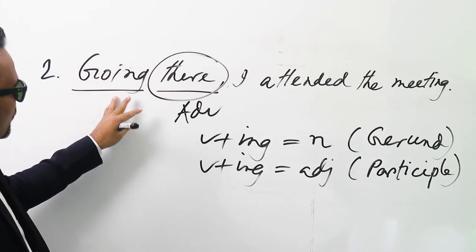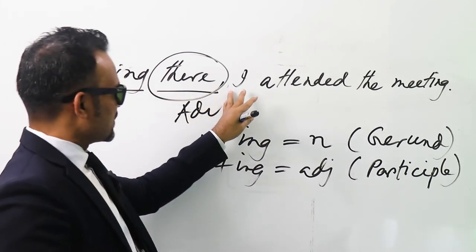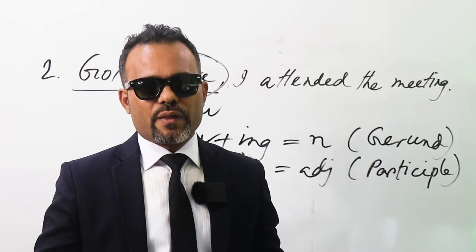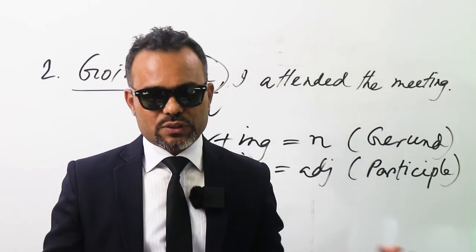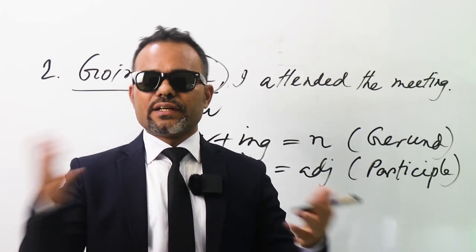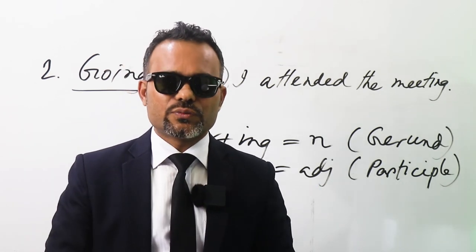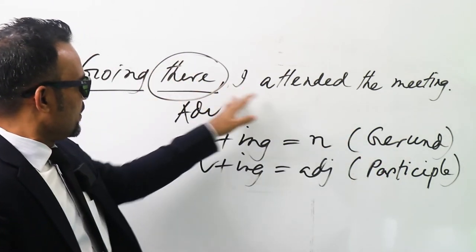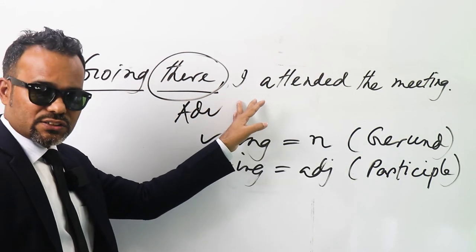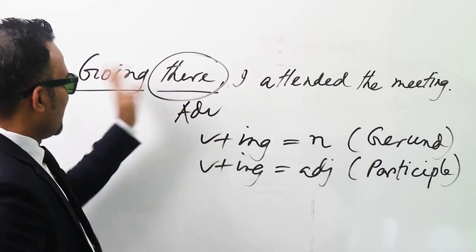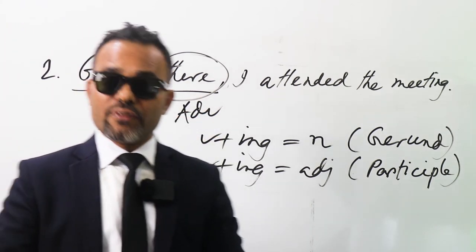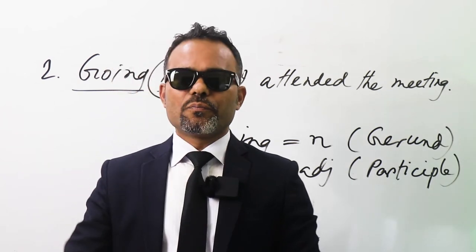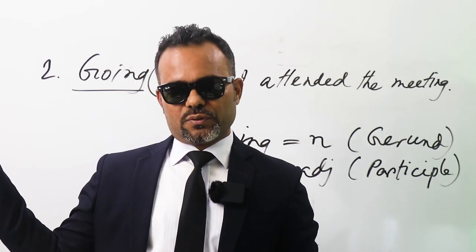Look at 'going there' — up to this part, you can call it a phrase or a clause. In modern English it's a clause; in traditional English, a phrase. Whatever it is, we can remove it. So this is actually a participle. Another way: 'there' is an adverb. An adverb can modify a verb, not a noun. So this is participle.